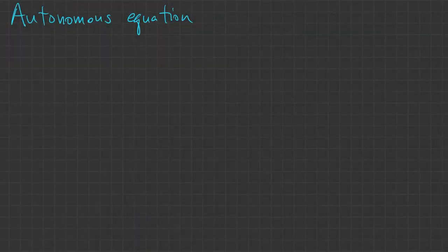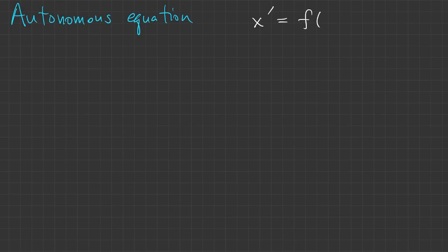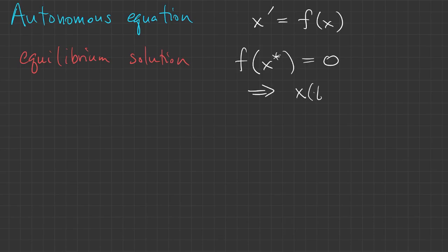There's a particular special case known as an autonomous equation. That's when this function f is independent of t. In this kind of problem, we're interested in equilibrium solutions. If x star is a value of x that makes f equal to zero, then x equal to x star is a constant solution of the equation. That's what we call an equilibrium solution, or a fixed point.